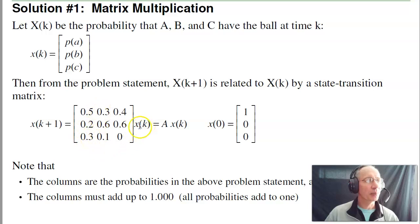The second column is if B has the ball, zero, one, zero for the states. If B has the ball, B passes it to A 30% of the time, keeps it 60%, passes it to C 10%, and so on. So you can see the state transitions in this A matrix.